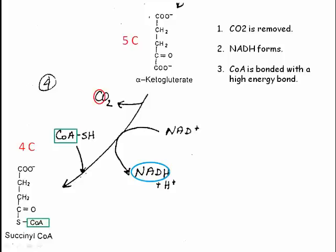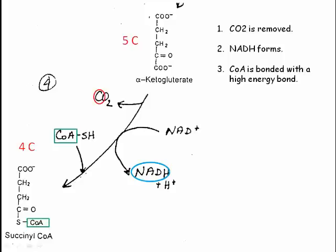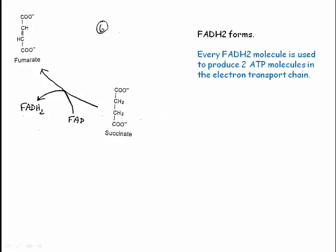Now we have CoA bonded with a high-energy bond. In the next step, the CoA is actually removed from this four-carbon molecule and we end up with another four-carbon molecule, but a little bit more energy is removed from that succinyl-CoA and we actually get some ATP forming. This is really important. It's our first actual ATP molecule from the Krebs cycle or the citric acid cycle.